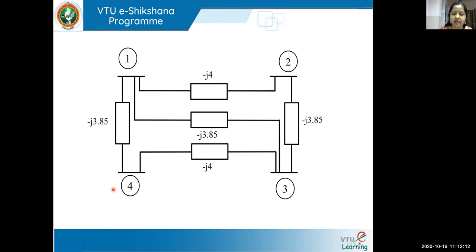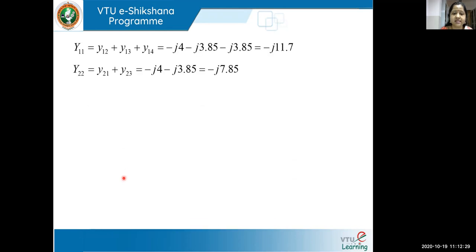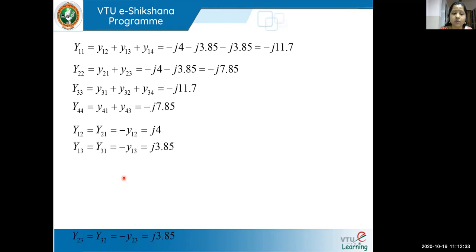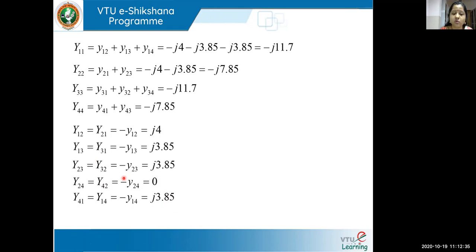We can go back to the network to cross-check: there is no connection between bus two and bus four, which is directly indicated by Y24 and Y42 being zero. This is an advantage over Z bus, which is a full matrix. If there is no connection between any two buses, it is represented as a zero element in Y bus, making the Y bus a sparse matrix. Sparse matrix means more elements are shown as zero in the Y bus.